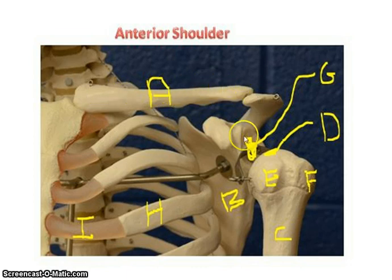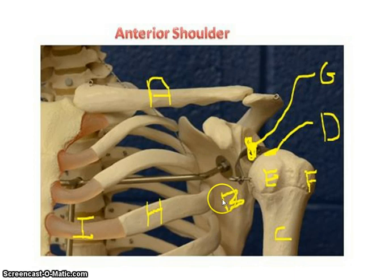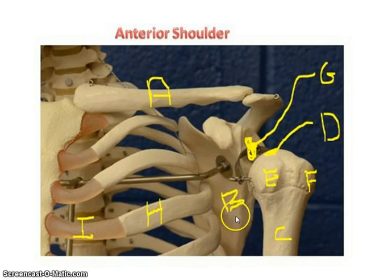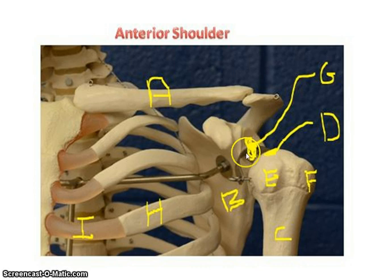The clavicle articulates with the scapula posteriorly, which I will show you a different view of. The one surface marking of the scapula that you can see here is the glenoid cavity, and you'll notice this is where the humerus — which is this bone — is going to articulate.